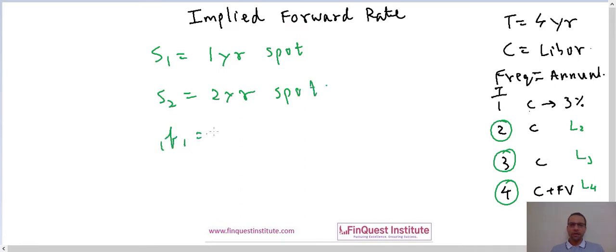Let's call F11 as the forward rate, or it's the one-year forward rate one year from now.